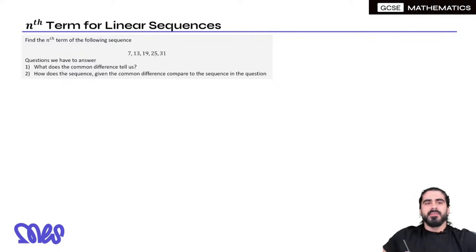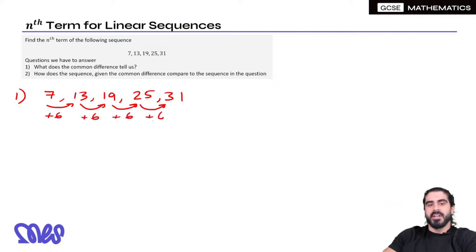So find the N term of the following sequence. Now, the first question we need to answer is, what does the common difference tell us? What does the common difference between each term tell us? We're adding 6 each time, right? Now if we're adding 6 each time, because we're adding 6, we know the coefficient of N is 6N. So we know the coefficient of N is 6.